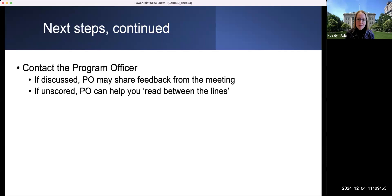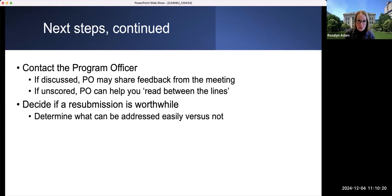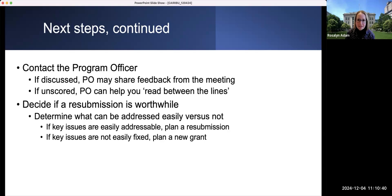If your grant was not discussed, the program officer, based on years of experience, can often help you read between the lines and really help you determine what was it about your proposal that the reviewers really didn't like. So with all of this information at hand, you have to decide whether a resubmission is actually worthwhile. If you can easily address all of the comments, then that's probably the faster route to potentially getting the grant scored and hopefully funded. If the key issues are easily addressable, then plan a resubmission. But if the key issues are really fundamental and focus on a central component of your proposal, then it may be easier to go back to the drawing board and plan a new grant.